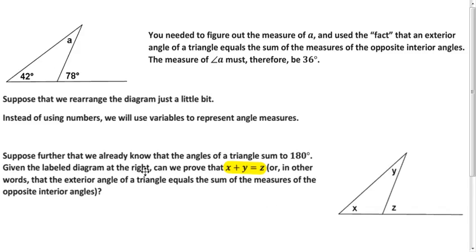So here we have an example of an exterior angle of a triangle. We already learned that its measure is going to be the sum of the measures of the two remote interior angles. So in this case, 78 degrees is equal to the measure of angle A plus 42 degrees. And so you solve for that unknown angle and you get 36 degrees. Well, what if we generalize it? We want to show that no matter which possible angles you plug in for X, Y, and Z, that this will be true.